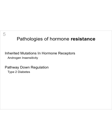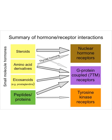Finally, there are pathologies of hormone resistance — for instance, inherited mutations in hormone receptors, such as androgen insensitivity. Pathways can also be tonically down-regulated; for example, that is the etiology of type 2 diabetes, in which insulin levels are actually very high but peripheral tissue does not respond to it. With that, I'll leave you with a diagram of hormone-receptor interactions, hoping this short discussion has added to your understanding of the different levels of regulation of hormones within the body.